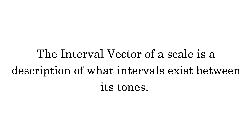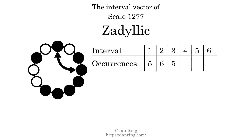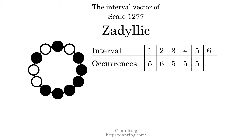The interval vector of a scale is a description of what intervals exist between its tones. There are 5 intervals with the size of 1 semitone. There are 5 intervals with the size of 3 semitones. There are 5 intervals with the size of 4 semitones. There are 5 intervals with the size of 5 semitones. There are 2 intervals with the size of 6 semitones. Each interval does not appear in this scale a unique number of times, so this is not a deep scale.